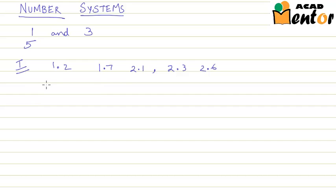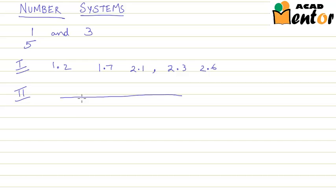If they ask you to find rational numbers which are equidistant from each other, then you will have to use the second way. Consider the number line between the integers 1 and 3. What we can do is find the midpoint of 1 and 3 by adding 1 and 3 and dividing by 2, which gives us 3 upon 2, or 2.